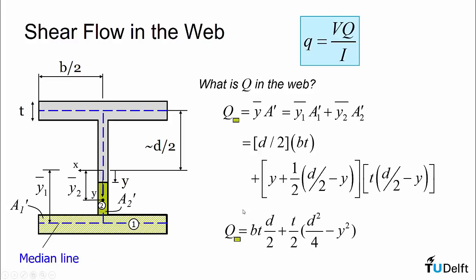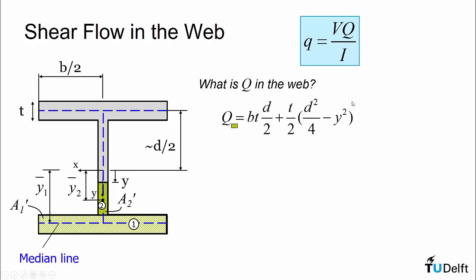If we combine that and simplify it, we can factor out the thickness and multiply through and get this following expression. Now what we need to do is substitute this expression that we've established for Q, of this compound area, into our shear formula. So if we do that, we again get that v and I are constant. We can factor out t from this expression and get vt over I times db over 2 plus one half open circular bracket d squared over 4 minus y squared closed circular bracket closed square bracket.